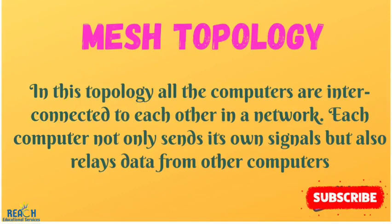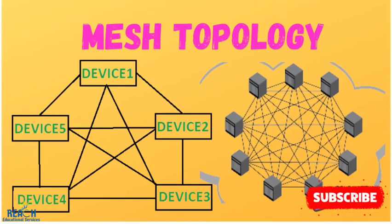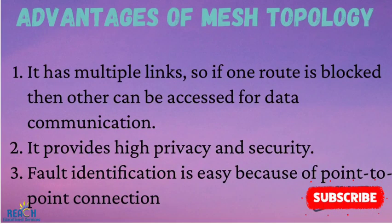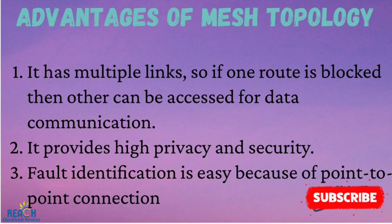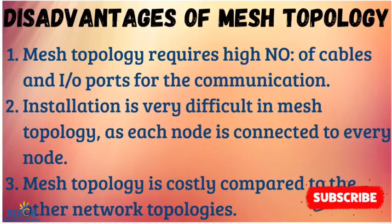In mesh topology, all the computers are interconnected to each other in a network. Each computer not only sends its own signals, but also relays data from one computer to another. Here are some good things about mesh topology. One, it has multiple links, so if one route is blocked, others can be accessed for data communication. Two, it provides high privacy and security. And three, fault identification is easy because of point-to-point connection.